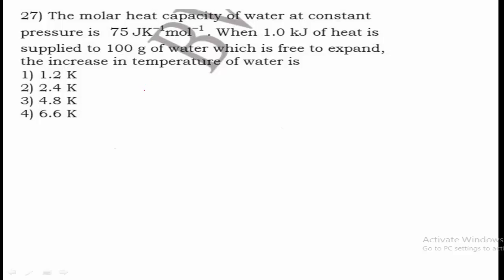Question 27: The molar heat capacity of water at constant pressure is 75 J/K/mol. When 1 kJ of heat is supplied to 100 g of water which is free to expand, find the increase in temperature. First, you should know what molar heat capacity is — it is the amount of heat energy required to raise the temperature of 1 mole of a substance by 1 degree Celsius.